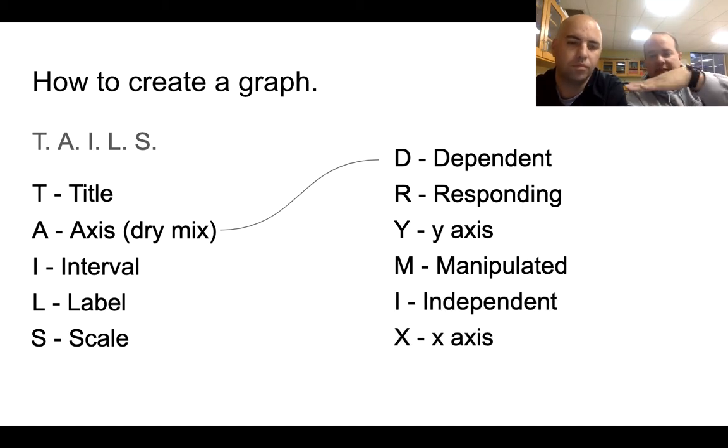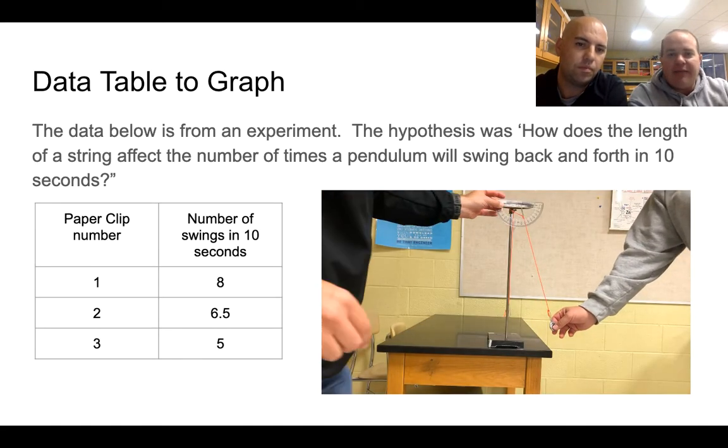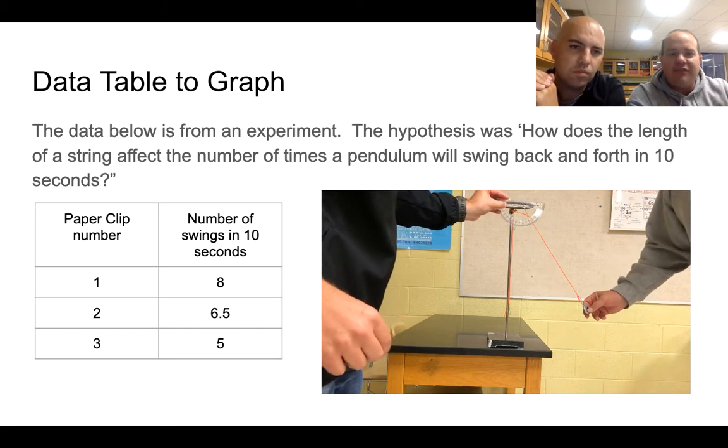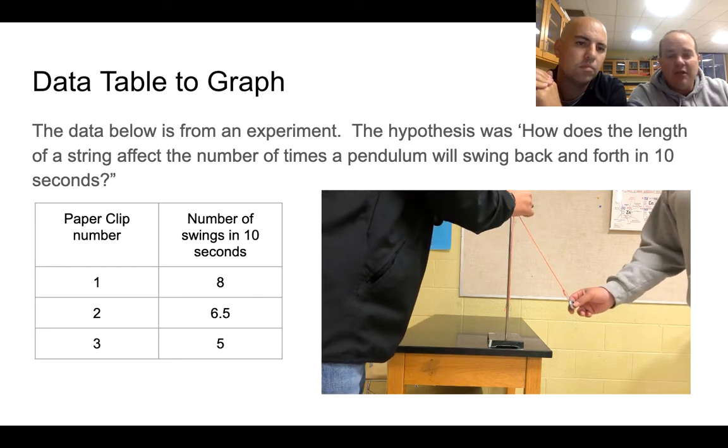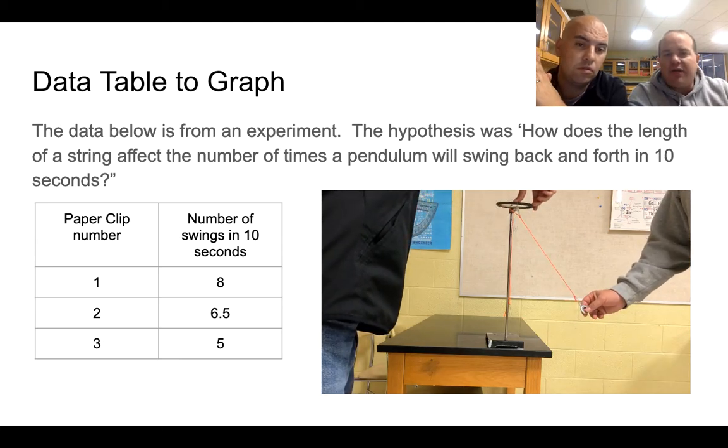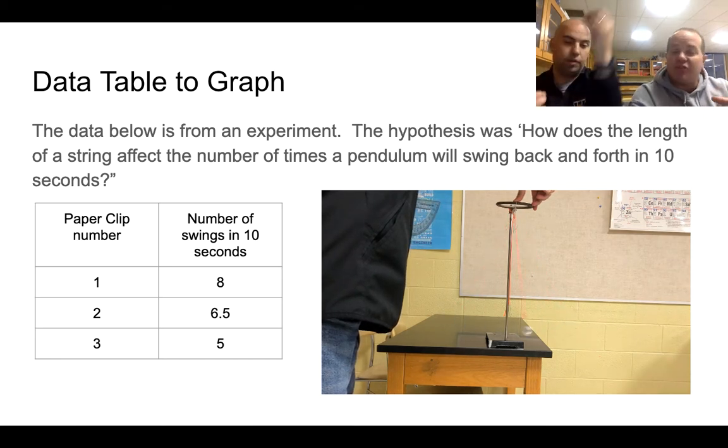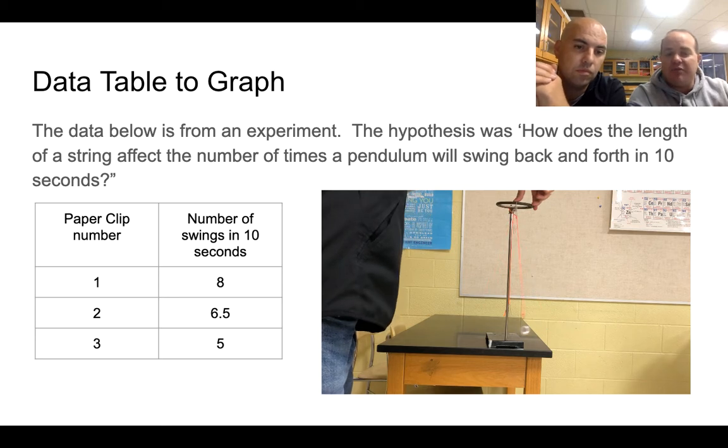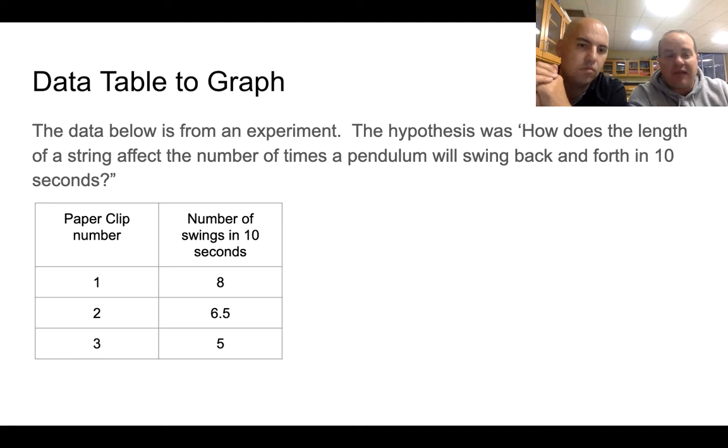So y-axis is vertical, x-axis is horizontal. We have this data - the question was how does the length of a string affect the number of times a pendulum will swing back and forth in 10 seconds. Mr. Spencer and I actually performed this with some string and some paper clips. Paper clip number one was the shortest length, number two was the middle, and then number three was the longest one. We counted how many times it swung back and forth in 10 seconds.